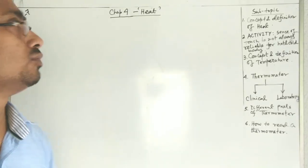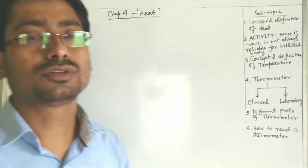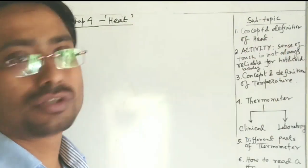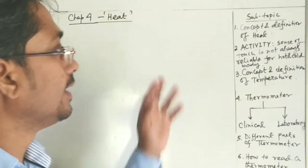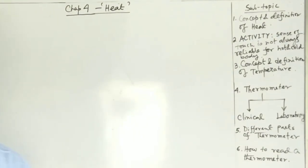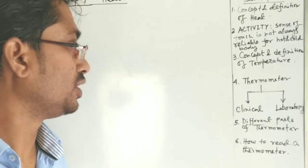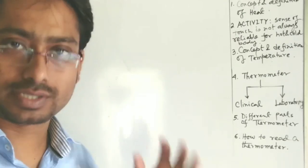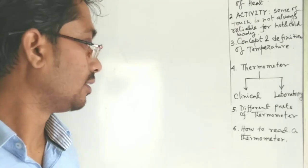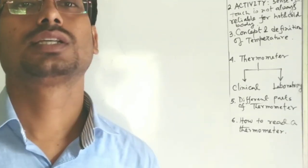Today we will learn about Chapter 4 of Class 7. This chapter contains several subtopics: the concept and definition of heat, the activity showing that sense of touch is not always reliable for hot and cold bodies, concept and definition of temperature, types of thermometers — clinical and laboratory — and different parts of a thermometer.